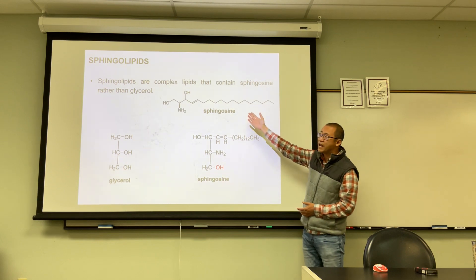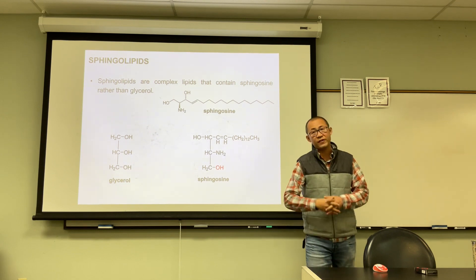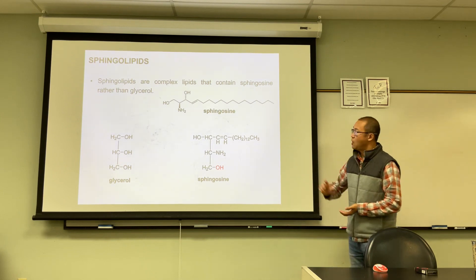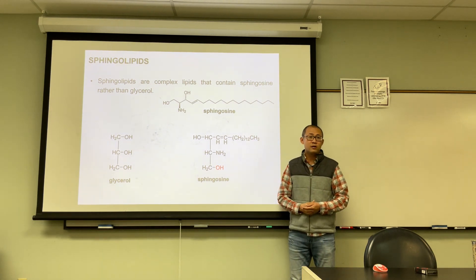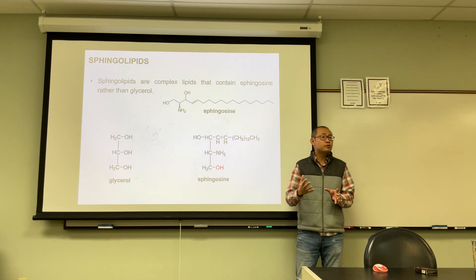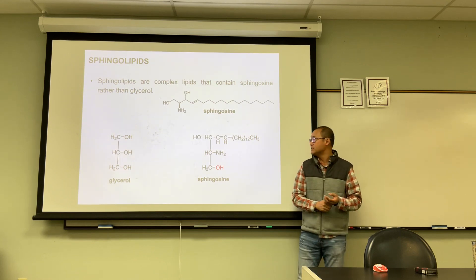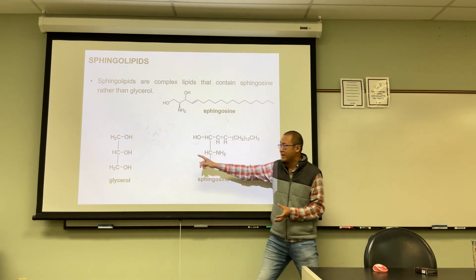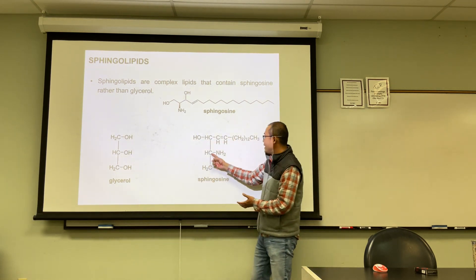For sphingolipids, the alcohol is no longer glycerol. The alcohol for sphingolipids has a very long chain structure. We call this alcohol sphingosine. It is a long chain with two hydroxyl groups and an amine group.